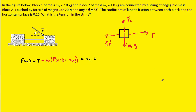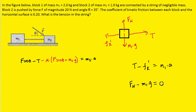We'll go over to Newton's second law in the x direction first. So we would have t minus the kinetic frictional force is equal to mass 1 times its acceleration. And then in the y direction, we would have fn minus m1 times g is equal to 0. Remember, the block is not accelerating in the y direction.